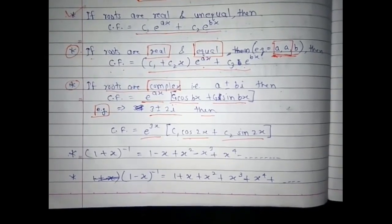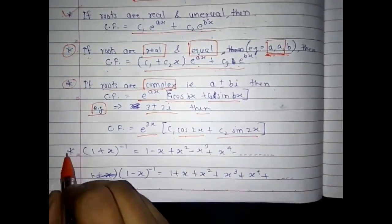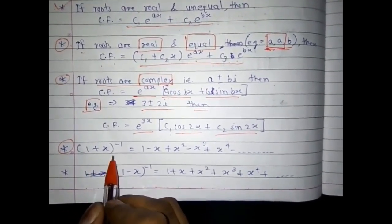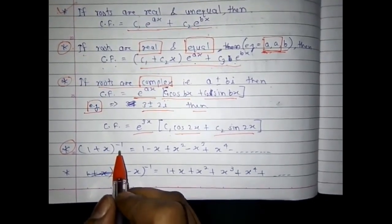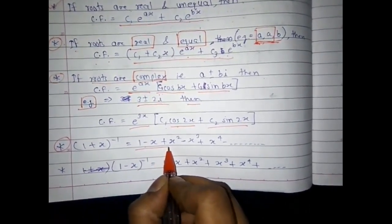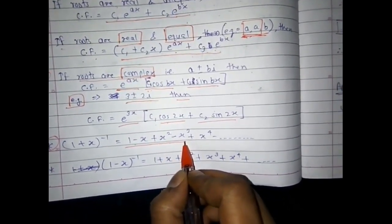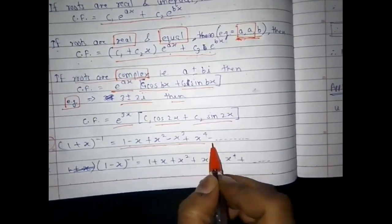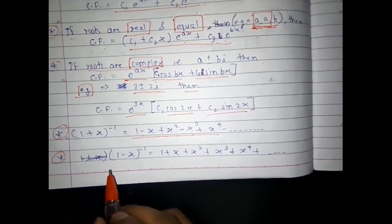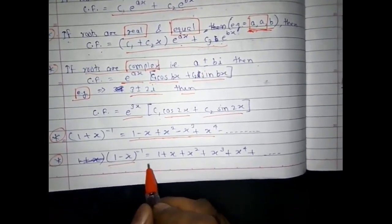Now we will see two expansions required to find the particular integral. The first expansion is (1 + x)⁻¹ = 1 - x + x² - x³ + x⁴ - and so on. The second expansion is (1 - x)⁻¹ = 1 + x + x² + x³ + x⁴ + and so on.